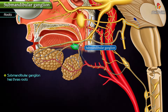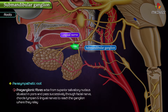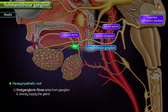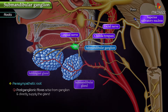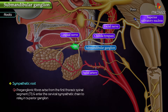The submandibular ganglion has three roots: parasympathetic, sympathetic, and sensory. Parasympathetic root: it is derived from the lingual nerve. The pre-ganglionic fibers arise from the superior salivatory nucleus situated in the pons, and pass successively through the facial nerve, chorda tympani, and lingual nerves to reach the ganglion where they relay. The post-ganglionic fibers arise from the ganglion and directly supply the gland.